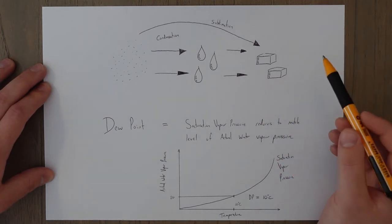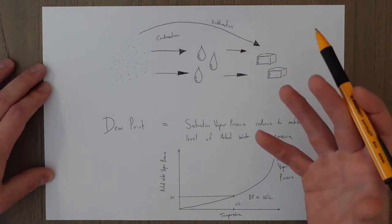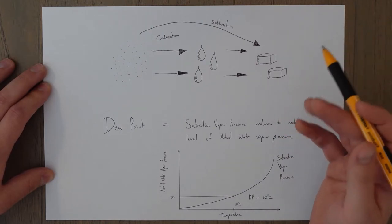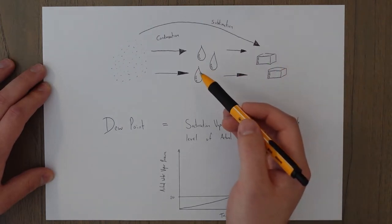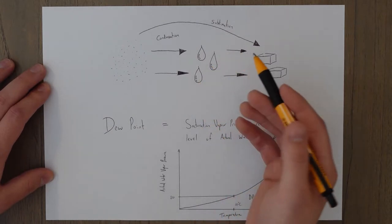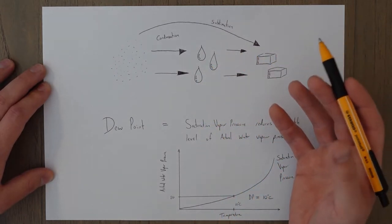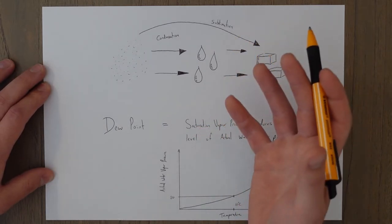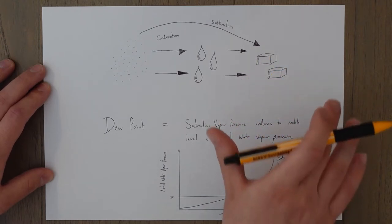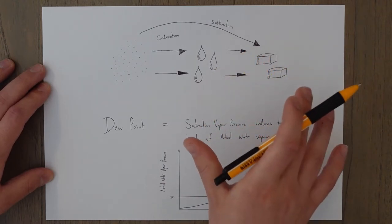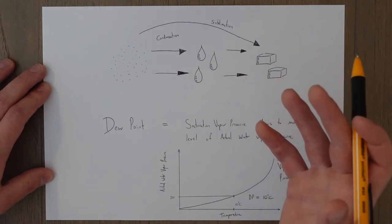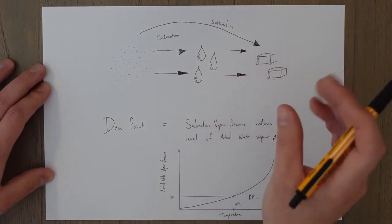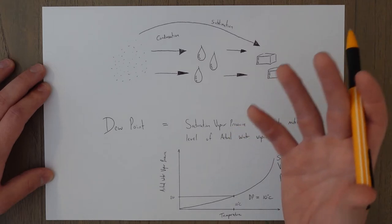Ice crystals form around impurities in the air. If there are very few impurities, such as smog or dust particles, you can end up with supercooled water droplets — extremely cold droplets of water that will only form ice when an impurity is introduced. This can happen when an aircraft flies through a cloud full of supercooled water droplets; the aircraft becomes the impurity, causing ice to form, for example on the leading edge of the wing.